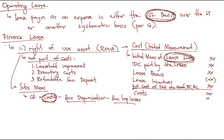On the statement of financial position, the right-of-use asset should be presented as a separate line item. Alternatively, the lessee may include the RUA in the appropriate line item where the corresponding underlying asset would be presented if owned — for example, adding it to the building line item. However, this is only an alternative; as a general rule, it should be a separate line item.